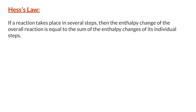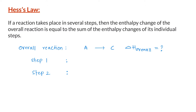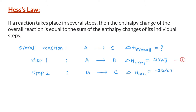For example, we have a reaction A changes to C, which takes place in two different steps. First, A gets converted into B and the enthalpy change for this reaction is 50 kilojoules — let's call this reaction 1. In the second step, B, which is the product of reaction 1, gets converted into C. The enthalpy change for this reaction is minus 200 kilojoules — let's call this reaction 2.